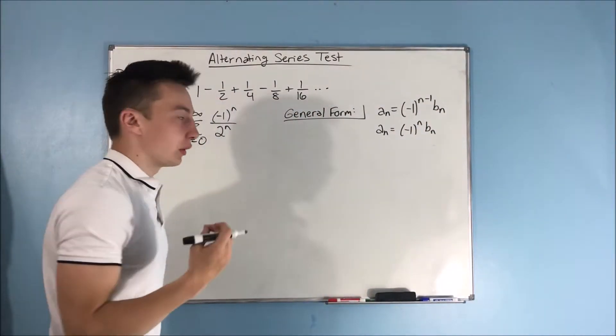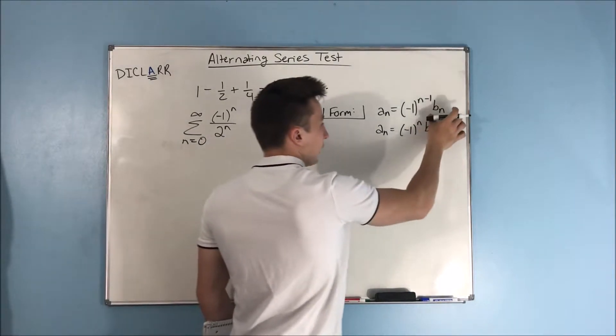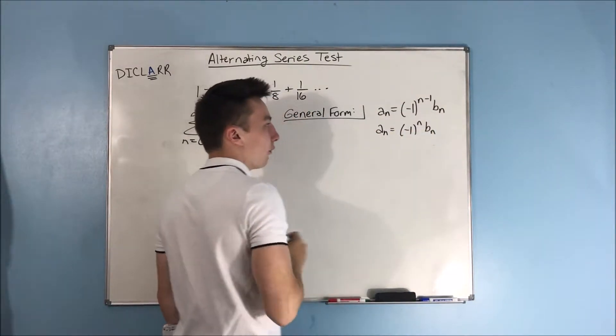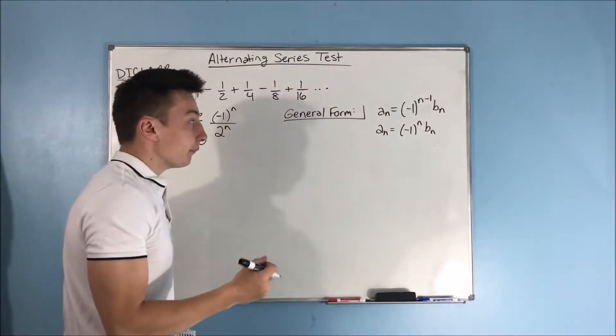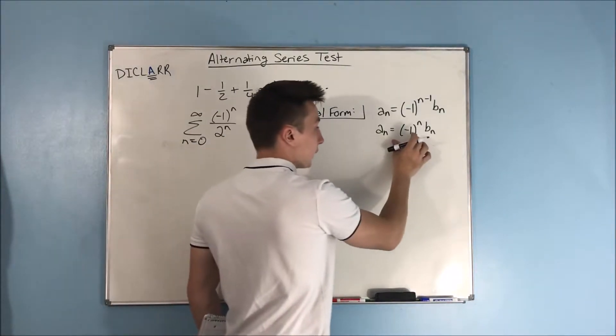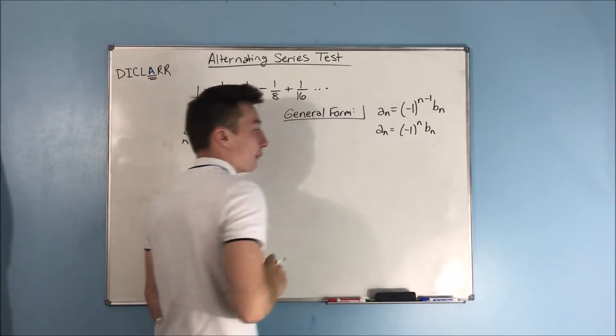It's basically every single part of that series except for that negative 1 to the n minus 1. And you also have a sub n equals negative 1 to the n times b sub n.